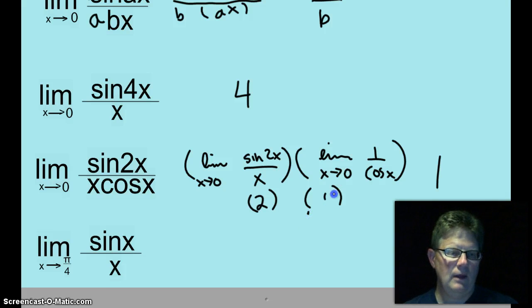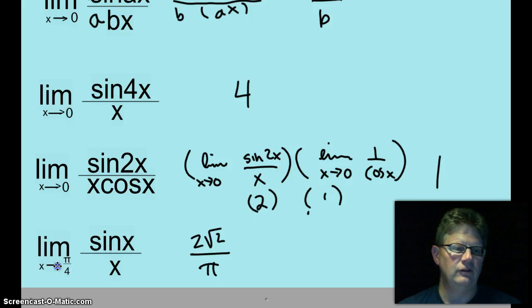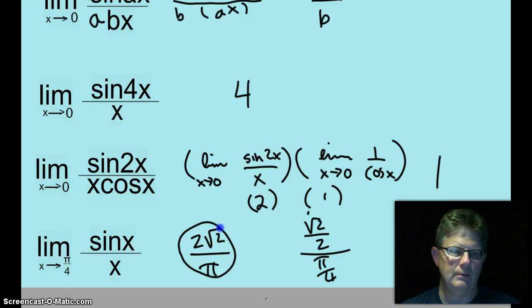And the limit as x approaches pi over four of sine x over x. Oh. Got you on this one. You thought it was one. But no. Sorry. The correct answer is two root two over pi. I'm thinking that you thought that was as x approaches zero. No. It's x approaches pi over four. Replace. And you'll end up with root two over two all over the x which is pi over four. Reciprocate and multiply. There's your limit.